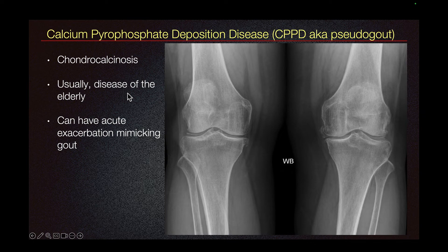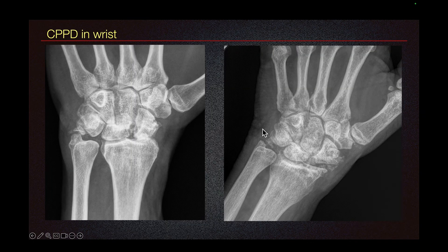Another important area that CPPD affects is the wrist. Here we have two different patients. Chondrocalcinosis in the wrist classically happens in the triangular fibrocartilage complex, also called TFCC. Here we do see chondrocalcinosis of the TFCC. The TFCC is located just distal to the ulna. Whenever you see chondrocalcinosis in the wrist and radiocarpal arthritis, always suspect CPPD.